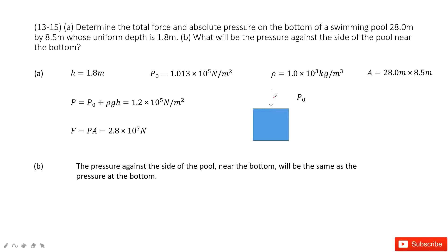This is swimming pool water. At the top of the water, we have the atmospheric pressure. At the bottom of the water, we need to add P₀ plus ρgh.